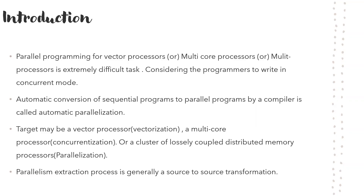Automatic parallelization basically converts sequential programming to parallel programming and achieves correctness in the program. The target code may be a vector processor — we can call it vectorization; a multi-core processor — we can call it concurrentization; or loosely coupled with numerous processes — we can call it parallelization. This process of parallelism extraction is generally source-to-source transformation.